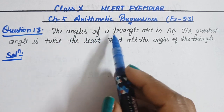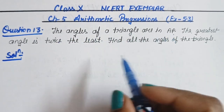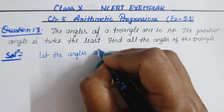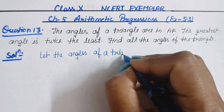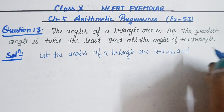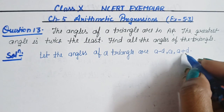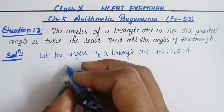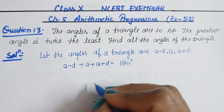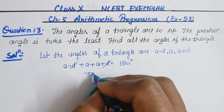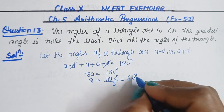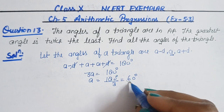Since the angles of the triangle are in AP, let the angles be A minus D, A, and A plus D. By the angle sum property of a triangle, (A − D) + A + (A + D) = 180°. The D terms cancel, giving 3A = 180°, so A = 60°. This means the middle angle is 60°.